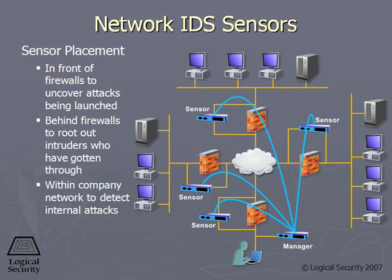But a lot of companies just put the sensor behind the firewall because they're only concerned about what actually got in — what got through their firewall. Because when you put it outside the firewall, it's going to gather so much information since there's so many things going on the internet, so many scans, so many attackers trying several different things, so it's going to gather a lot of data.